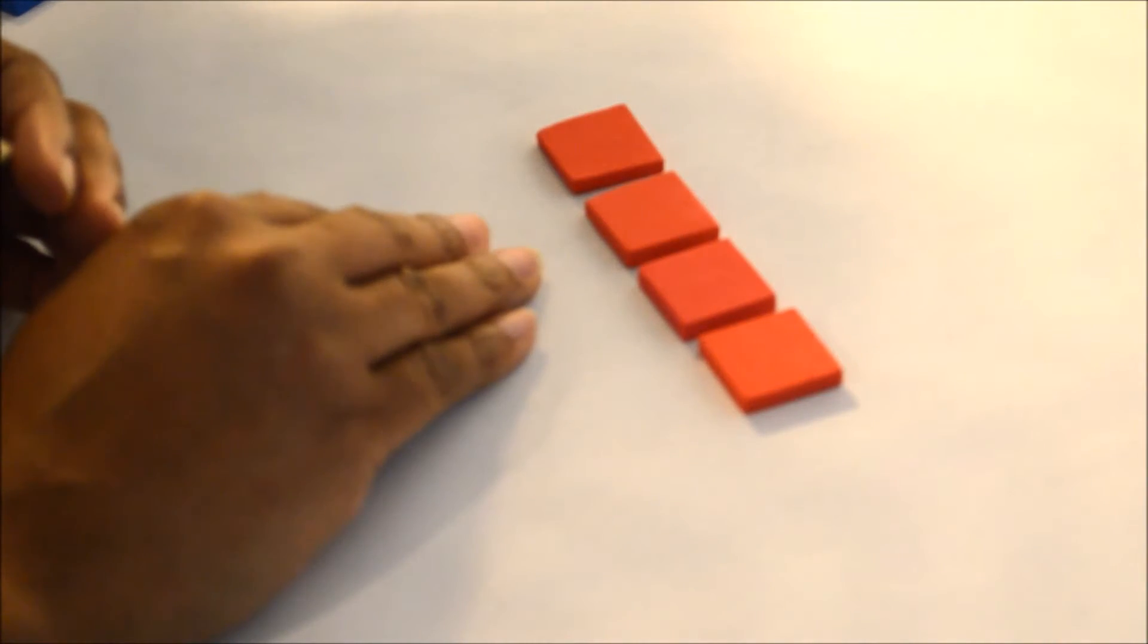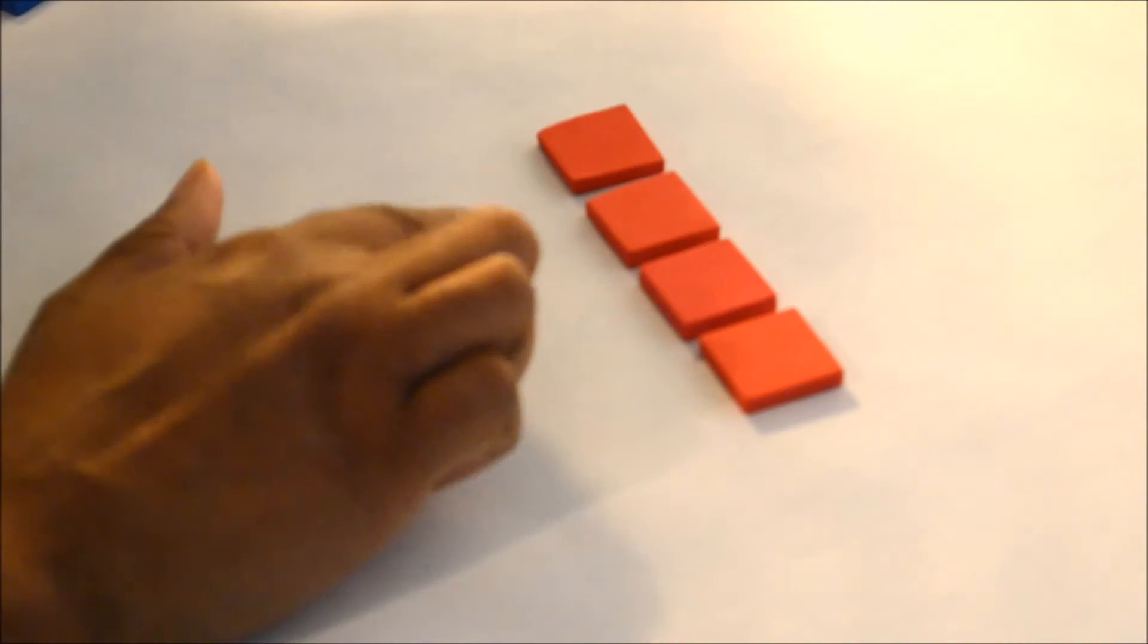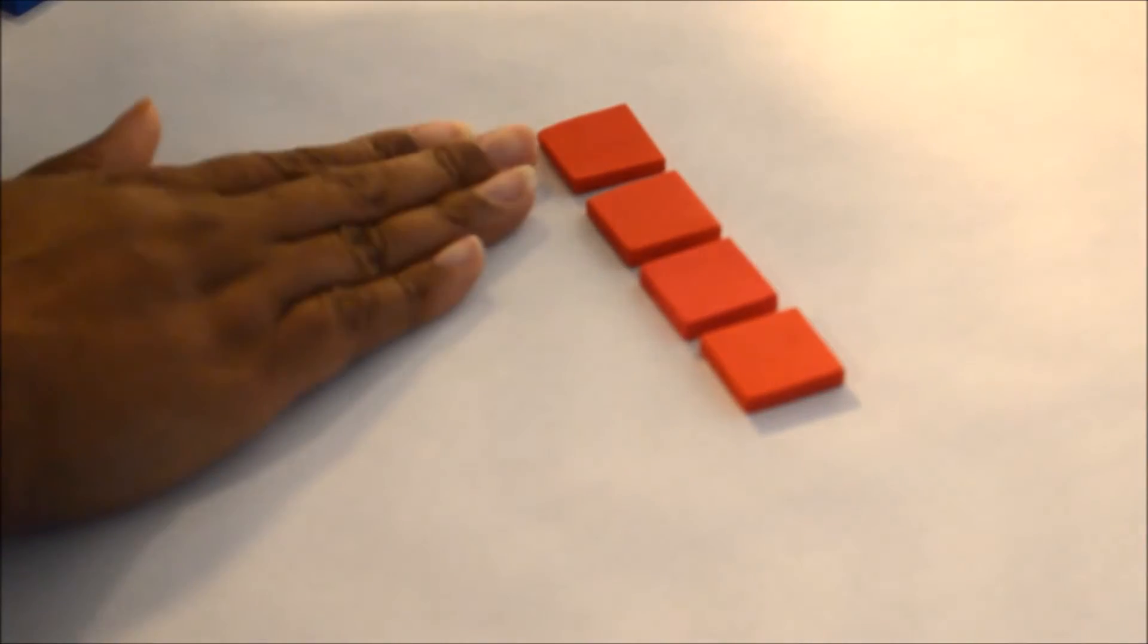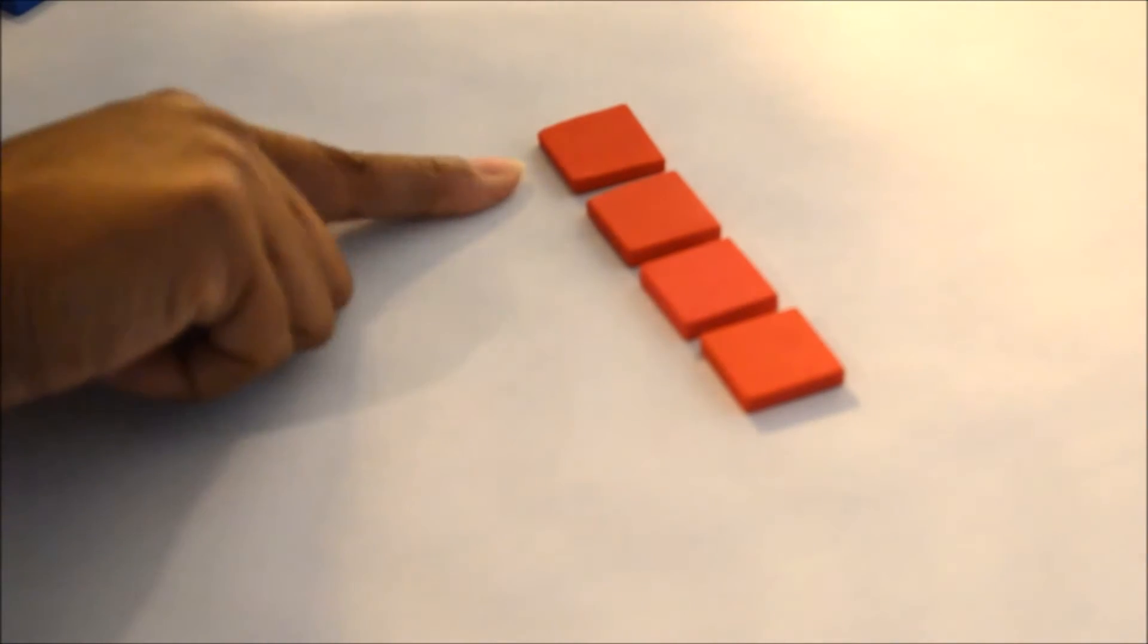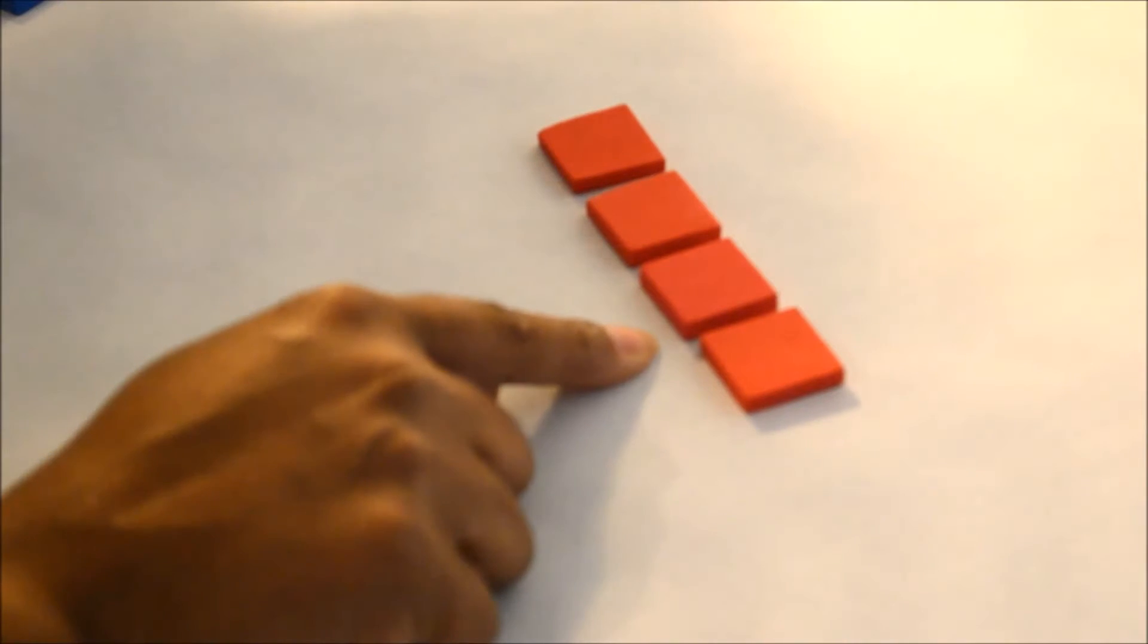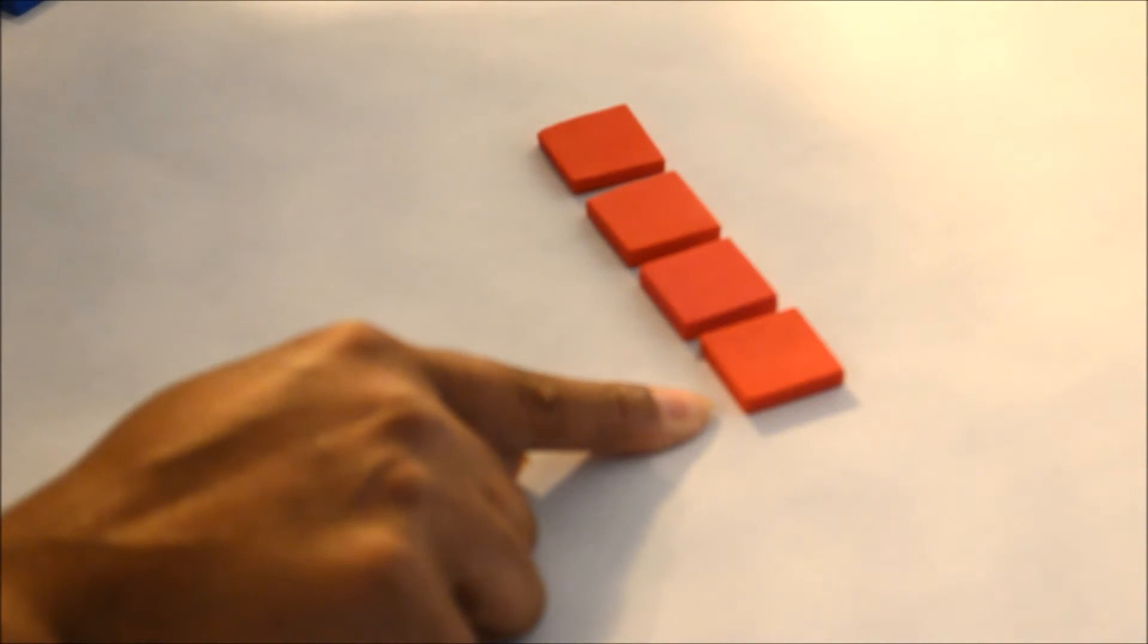And I like the way that Common Core breaks down the fractional concept because it makes teachers teach the unit fraction. So the students know that one red tile is one fourth, then I have two fourths, three fourths, and four fourths is one whole.